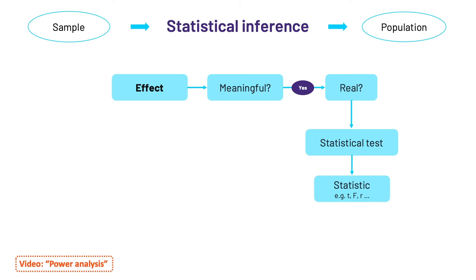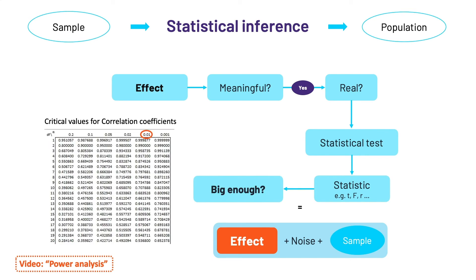This statistic is pretty much always the combination of the absolute effect, the noise, so the variability in the data and the sample size on which we base the confidence we have in what we see. That statistic is compared to a critical value and if it is bigger than it, we reach significance.